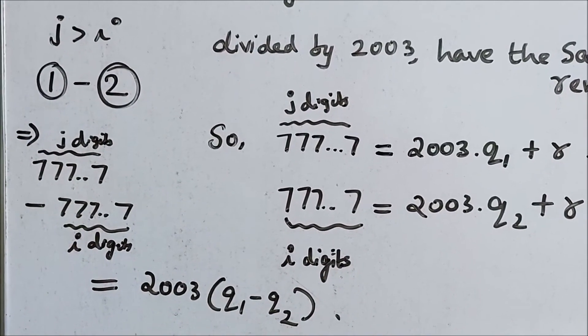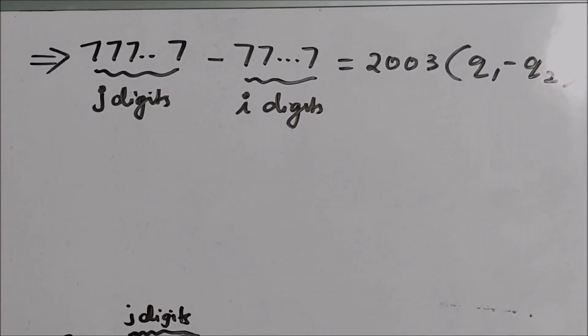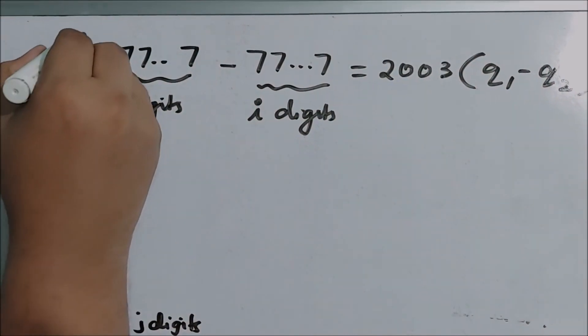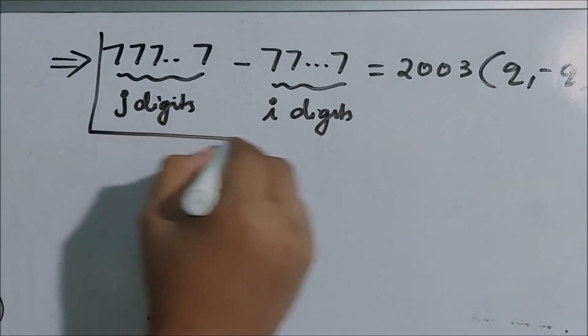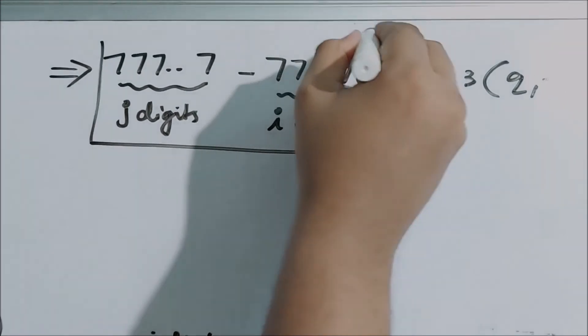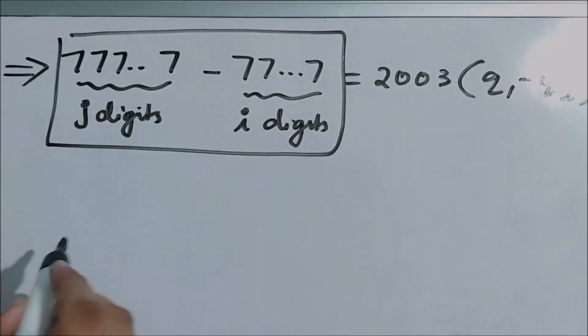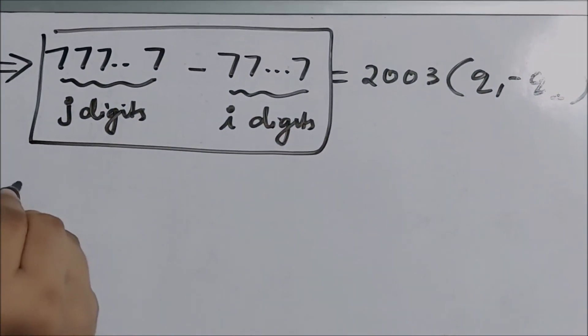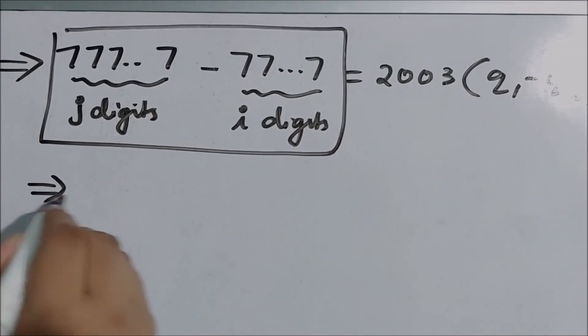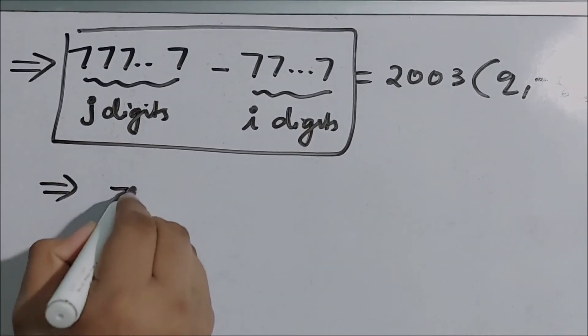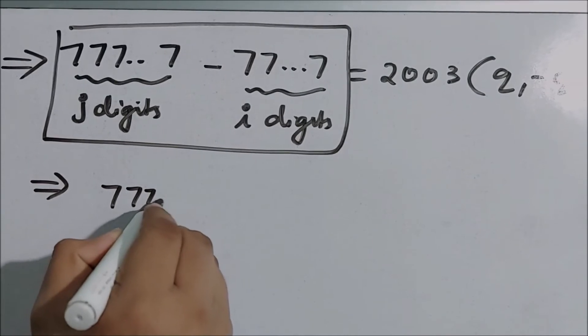So this difference between these two numbers is a multiple of 2003. So if you look at this equation and its LHS, what is the value of the LHS? Here, the i digits of 7 is subtracted from the j digits of 7 where j is greater than i. And what will be that value?